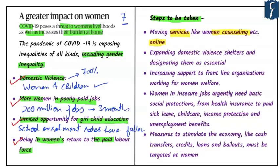We need to expand domestic violence shelters and designate them as essential services. Thinking holistically, counseling is one part — giving alternate shelter is another important aspect. Third is increasing support to frontline organizations working for women. In the current context, the focus is primarily on healthcare, but the issues women and children are facing cannot be neglected in the long run.